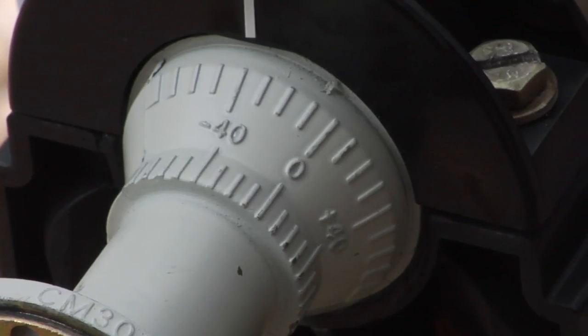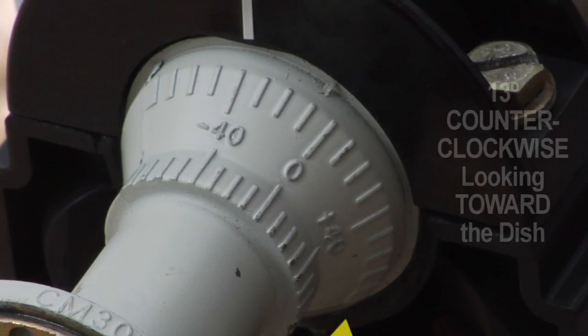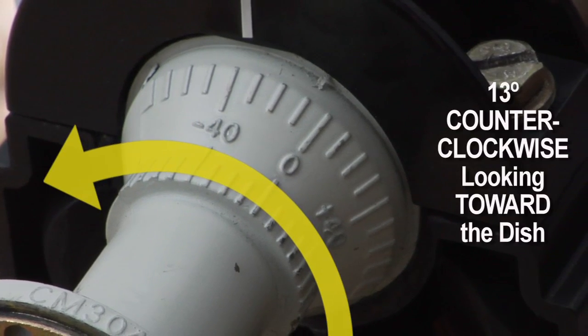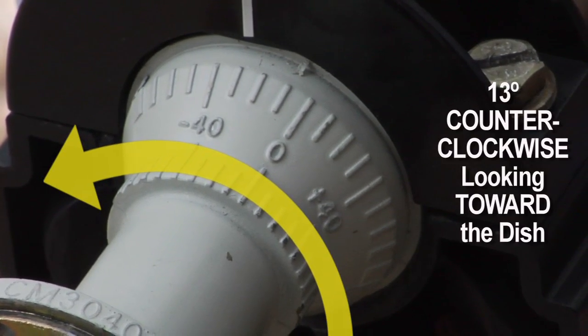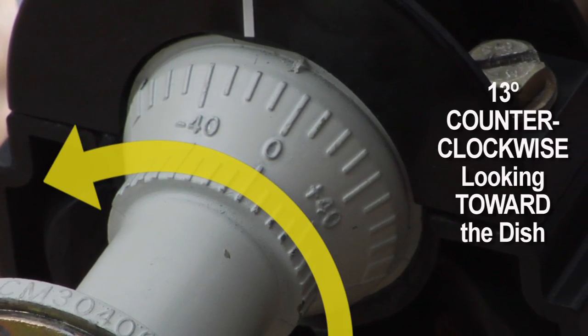Next, using the scale which is calibrated in degrees, rotate the feed horn 13 degrees counter-clockwise as you look toward the dish. In this case, each mark is 10 degrees, so your rotation should be a bit more than one mark.